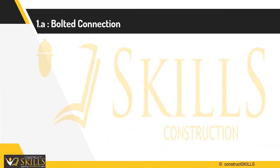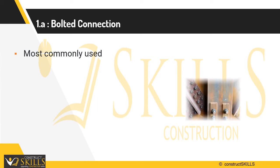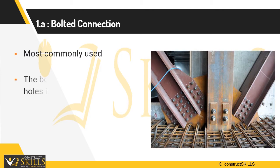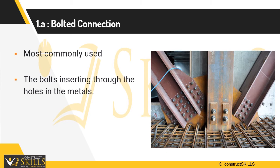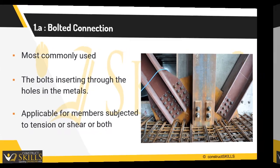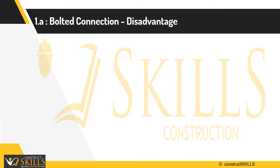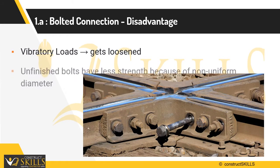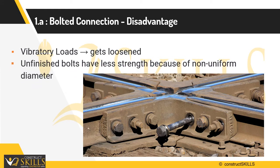Bolted joints are the most commonly used connections. Bolts have largely replaced rivets due to their lower installation cost, ease of installation, and maintenance. Bolts connect pieces of metal by inserting them through holes in the metals. Bolts are of two types: high-strength bolts and bearing-type bolts. Bolts can be loaded for members subjected to tension, shear, or both. The disadvantage of bolted connections is that if the structure is subjected to a lot of vibratory loads, bolts get loosened, reducing strength. Also, unfinished bolts have lesser strength due to non-uniformity in diameter.